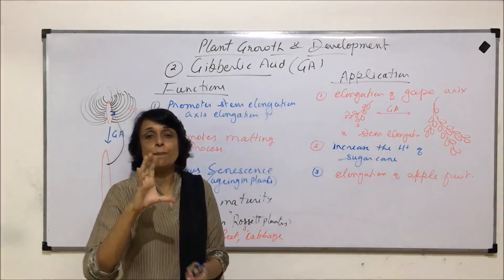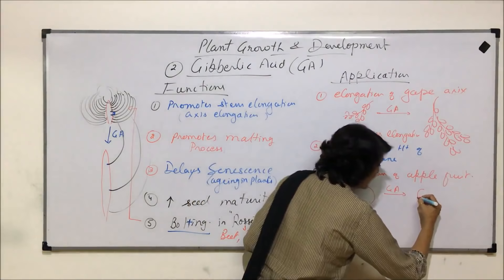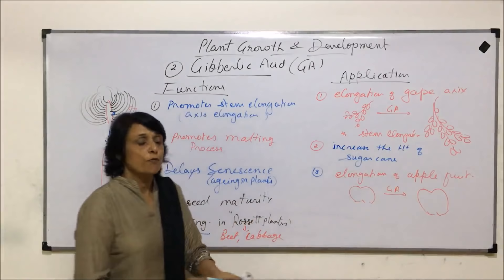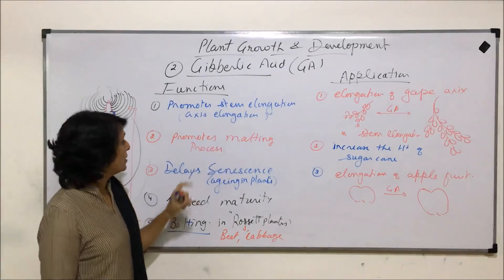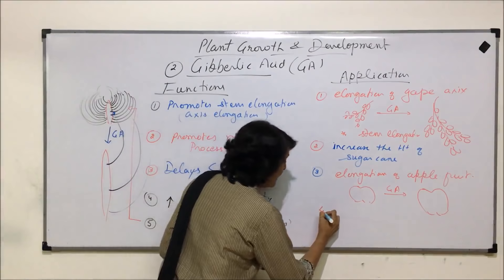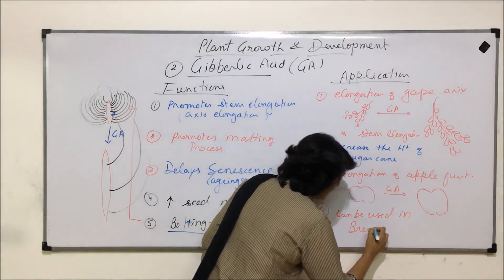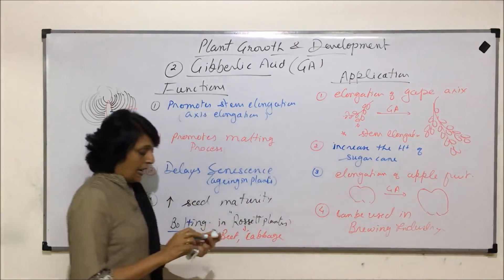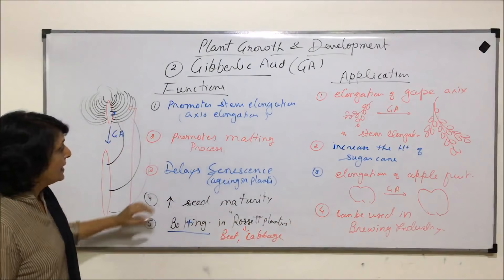Elongation of apple fruits helps in shape correction. Many times apples are slightly smaller, but if treated with gibberellic acid, the apples become longer and would fetch more price for farmers. All three of these applications come from the same function — promoting stem elongation. The malting promotion property means gibberellic acid can also be used in the brewing industry, where malting and fermentation processes take place.